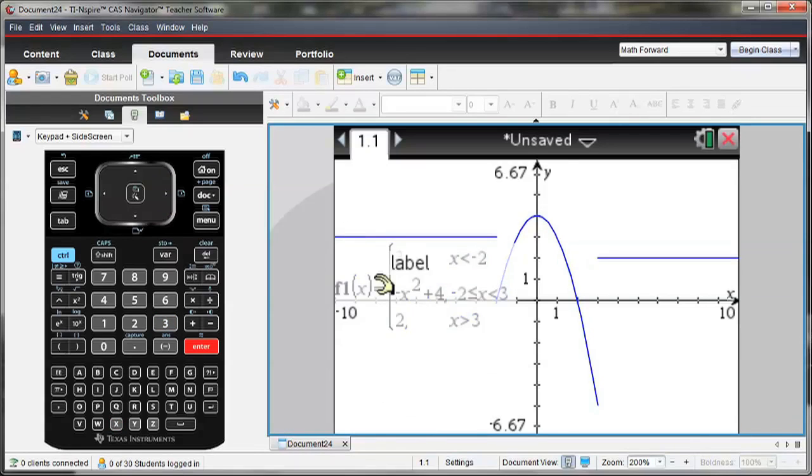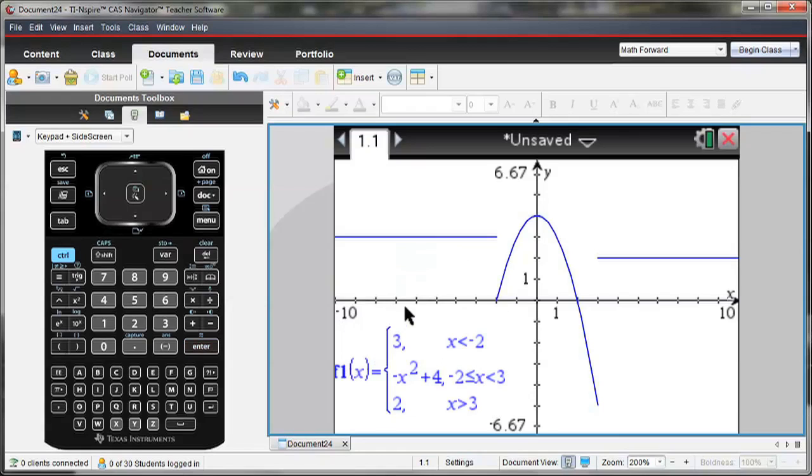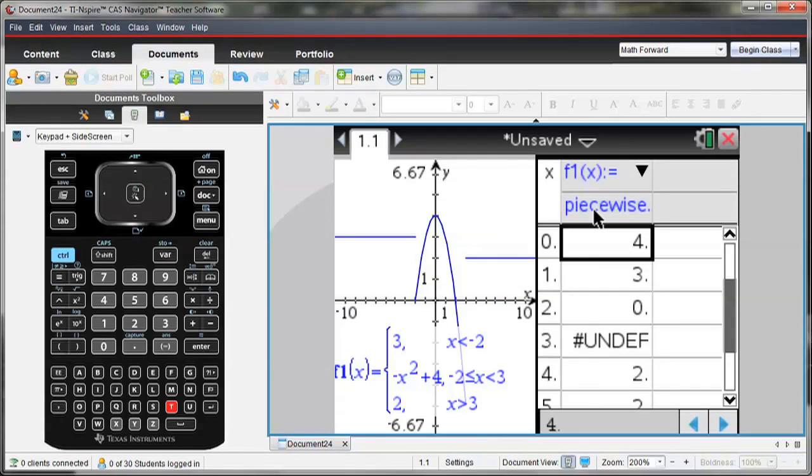So I can graph my equation and see what it looks like on the graph. But then I can also take a look at what this might look like in a table. So I'm going to insert a table and look at that table side by side with my piecewise equation.